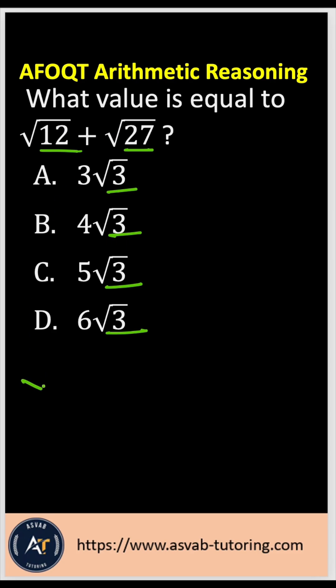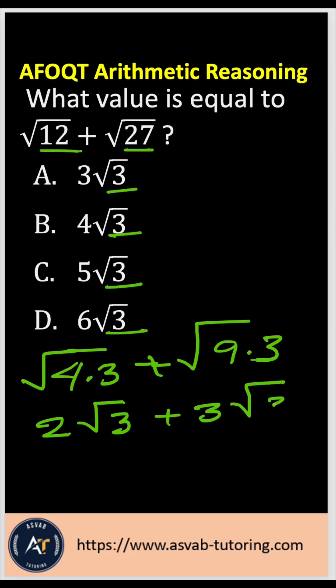That gives you 4 times 3 plus square root of 9 times 3. So if you simplify that one, that gives you 2 square root of 3. Here gives you 3 square root of 3, right?